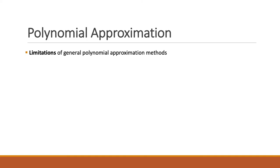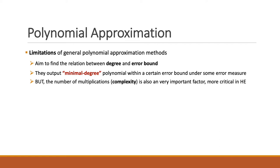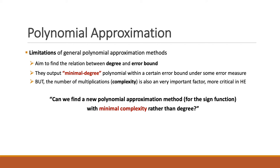What are the exact limitations of these general polynomial approximation methods? These methods commonly aim to find the relation between degree and error bound — they output the minimal degree polynomial within a certain error bound under some predetermined error measure. However, the number of multiplications, which we call complexity in this talk, is also a very important factor, and it is actually more critical in homomorphic encryption since there is a large computational overhead compared to plaintext computation. So we came to the following natural question: can we find a new polynomial approximation method for the sine function with minimal complexity rather than degree? This was the starting point of our work.